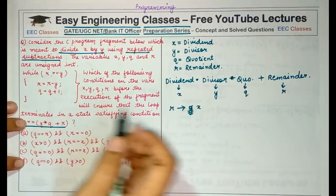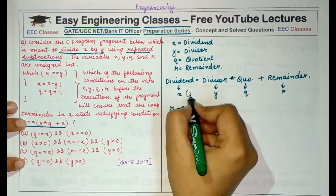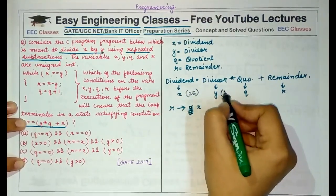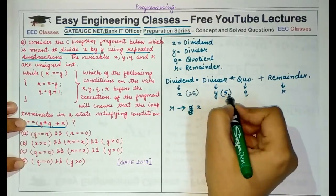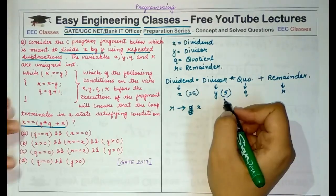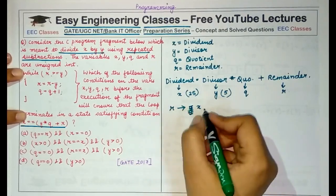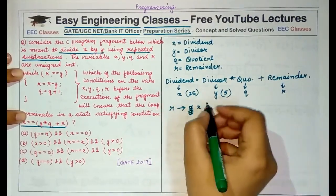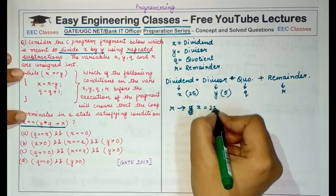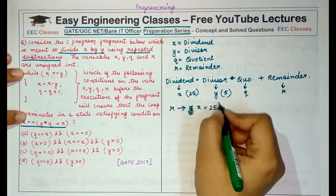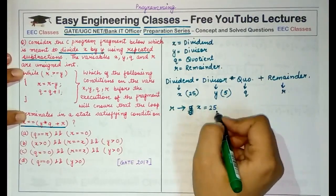So initially if we say we have a dividend of 25, the divisor of 5, we have to divide 25 by 5 but we have to divide it using repeated subtraction.